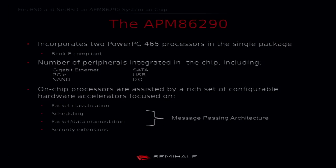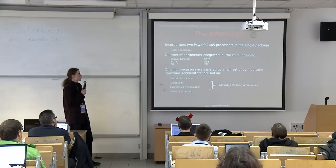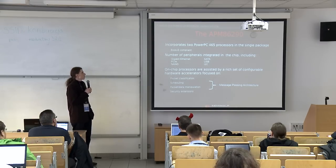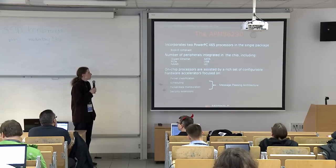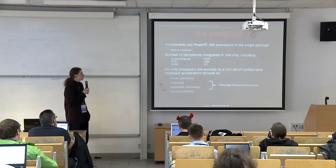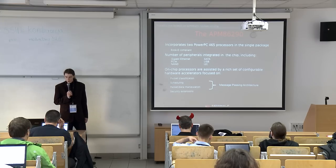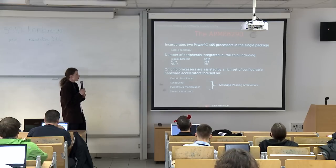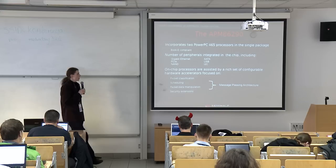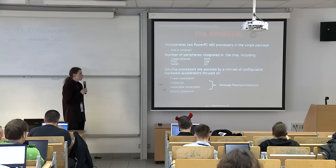Now a few words about the hardware. APM 86290 incorporates two PowerPC Book-E compliant cores in a single package. It is delivered with a bunch of peripherals integrated in the chip, including Gigabit Ethernet, PCI Express, NAND memory, SATA, USB, I2C, and others. On-chip processors are assisted with a rich set of configurable hardware accelerators focused on packet classification, scheduling, packet manipulation, and security extensions. Scheduling and packet/data manipulation is combined in a facility named message-passing architecture.